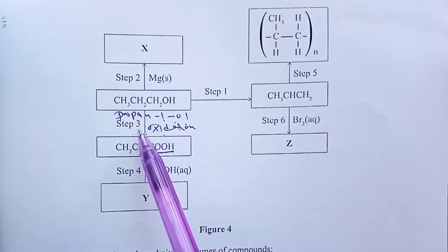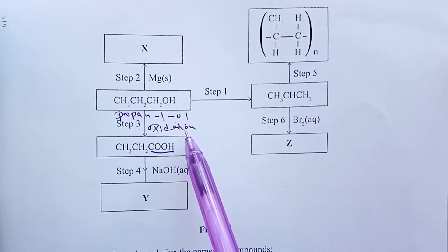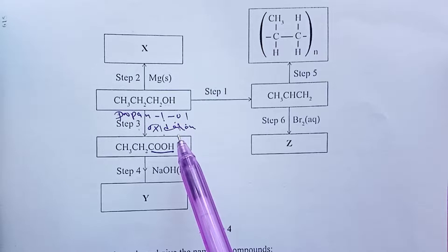So for step three, this is oxidation. Don't forget we do use our common oxidizing agents, that is acidified potassium manganate(VII) or acidified potassium chromate(VI), and then we heat. So heat is our condition.